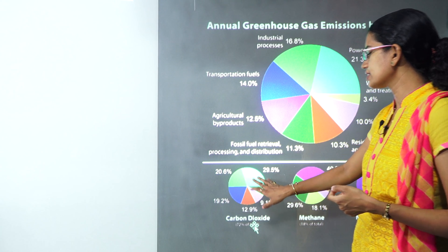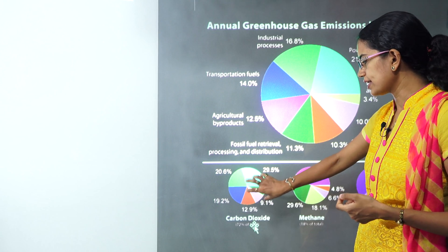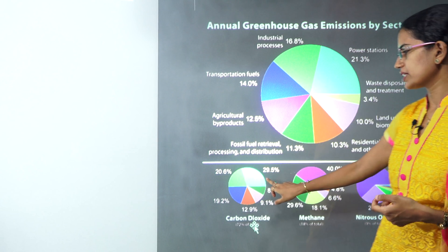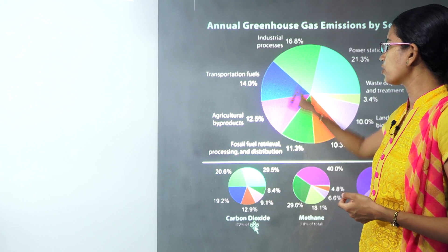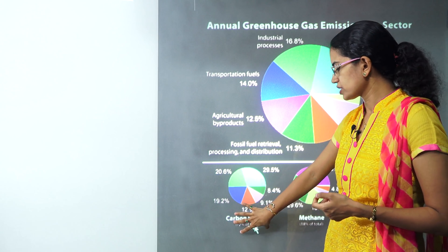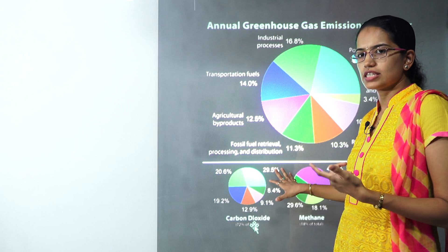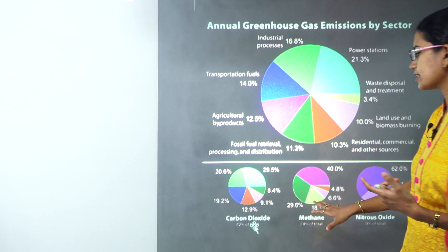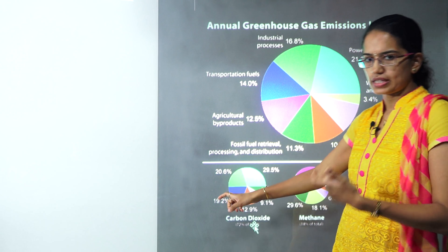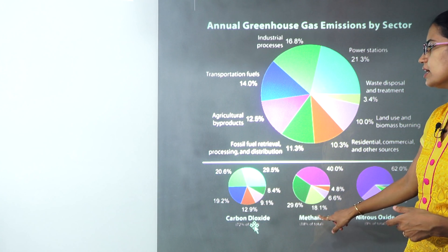Now within carbon dioxide, the highest sector that emits carbon dioxide is the power stations followed by the industrial processes. So carbon dioxide is released mainly from the industrial processes and the power sector — highest by the power sector followed by the industrial processes.